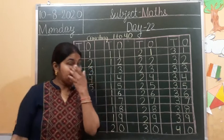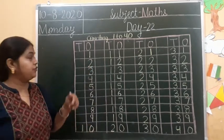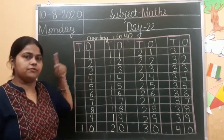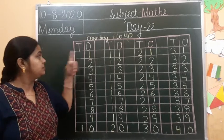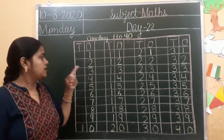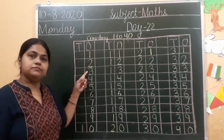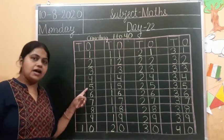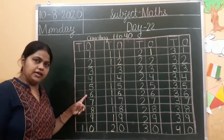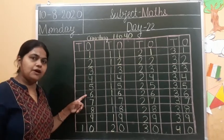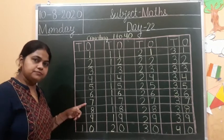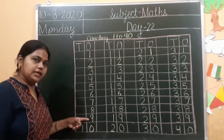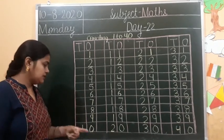Now again you have to count with me. Let's start. 1, 2, 3, 4, 5, 6 — yes, you have to read with me — 7, 8, 9, 10.